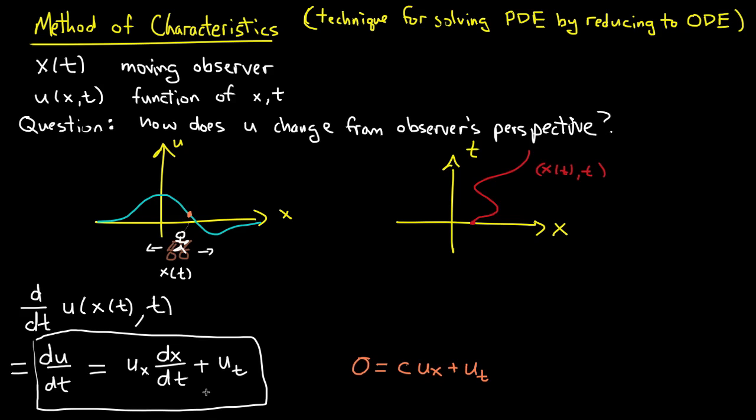and dx/dt was c, it would look just like the transport equation. So let's write that down too. So dx/dt is c, and du/dt is 0, then that expression looks just like the transport equation. What does it mean for dx/dt to be equal to c?